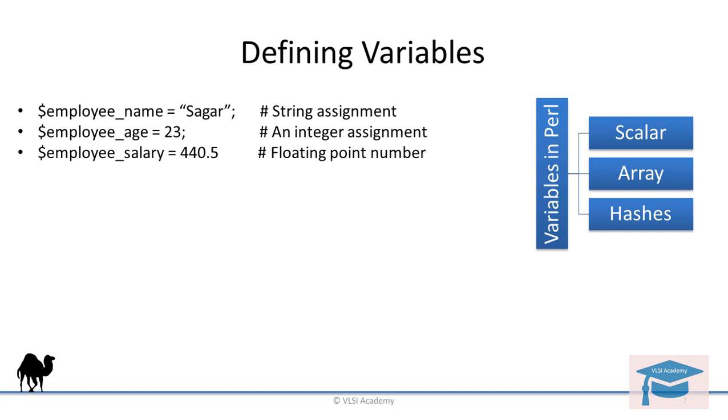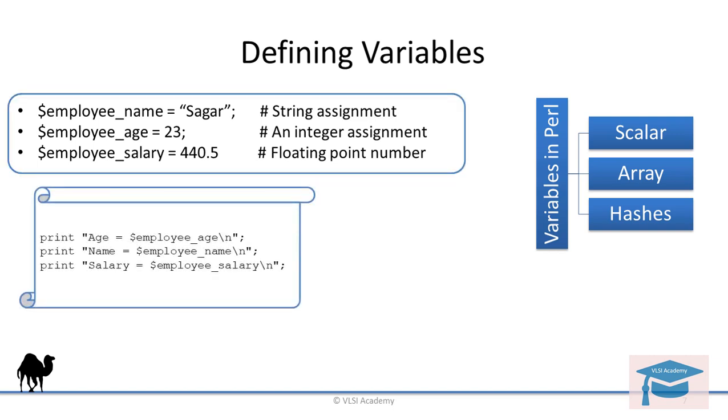If you want to print them, you can print them on a screen using this code. Print age is equal to $employee_age. With this $ the compiler will understand it has to print this scalar variable value. So employee_age will be 23. Employee_name is Sagar. It will print name is equal to Sagar. Salary is equal to $employee_salary, which will print 440.5, the floating point number. Everything it will take on its own. The output will look something like this.